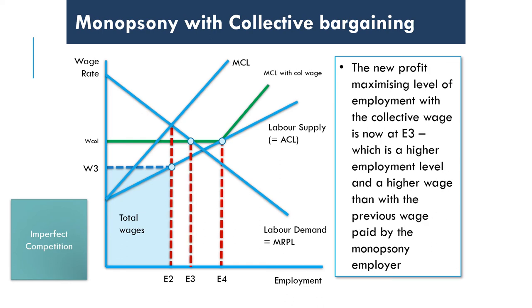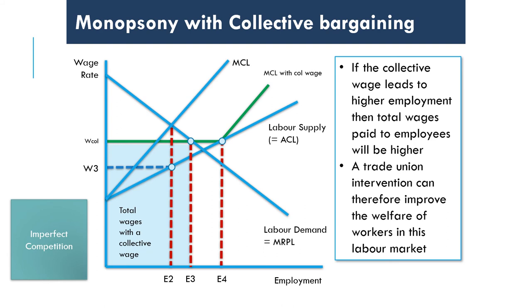In this situation, the new profit-maximising level of employment — where MCL with the collective wage bargaining meets MRPL — means the firm would now choose to employ E3 workers and pay them the collective wage rate W_coal. The total wages being paid out as a result of collective bargaining are actually greater: more workers are employed at a higher wage rate because the union has effectively removed some of the monopsony power from the large employer.